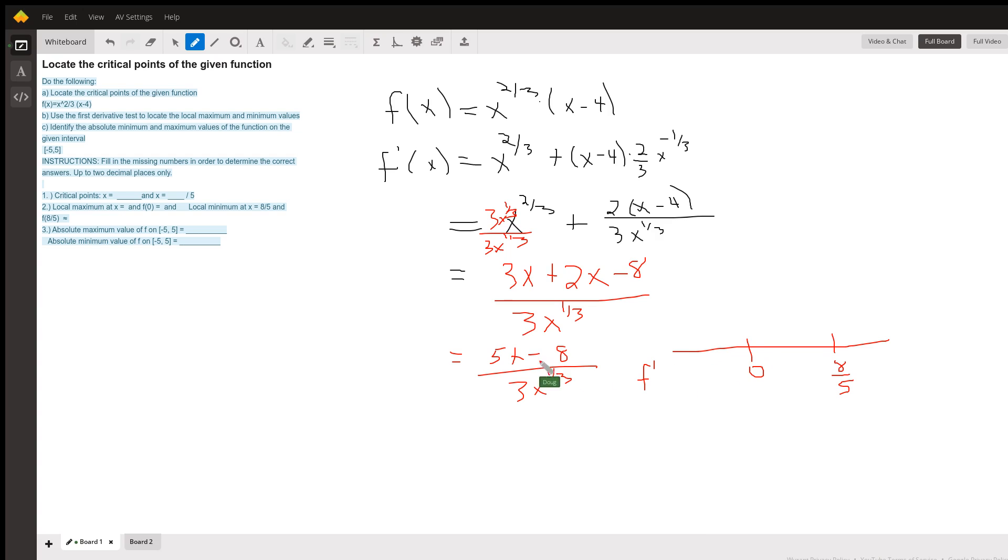So to the left of zero, like if you picture putting a negative 1 in here, you're going to get negative 5 minus 8 over the cube root of minus 1 is minus 1 times 3 is minus 3. You're going to get negative 13 over negative 3 is a plus. That's all we care about. When the first derivative is positive, that tells us that the original function is increasing.